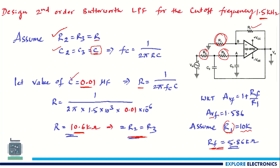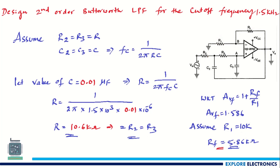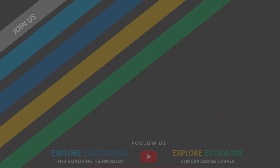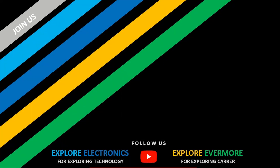This is how we calculate the values of R and C for the set frequency — here it is 1.5 kHz. Take other cutoff frequencies and try to calculate the values of R, C, and RF. Thank you.